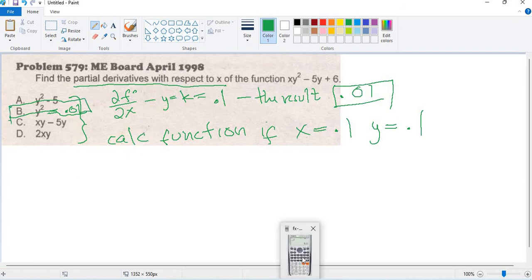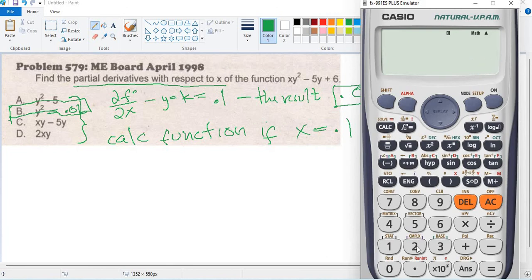Let's check option D. 2 times, since x is 0.1 and y is 0.1. Option D equals 0.02.